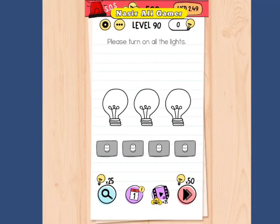Hello guys, how are you all? Maybe you are doing well. This is Brain Test level number 90: please turn on all the lights. Okay, no problem, I will show you the solution. Before this, please